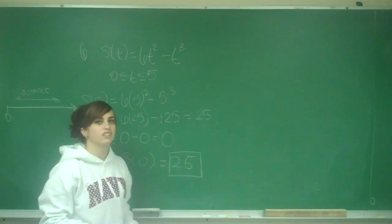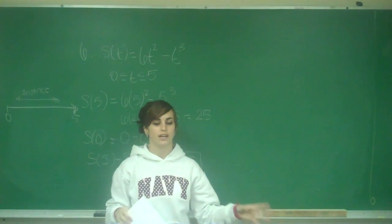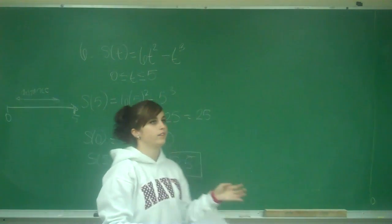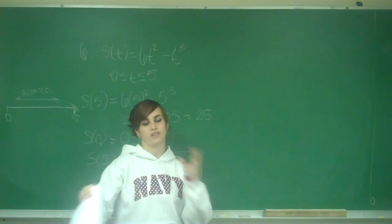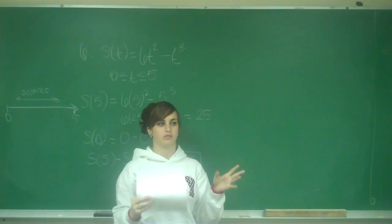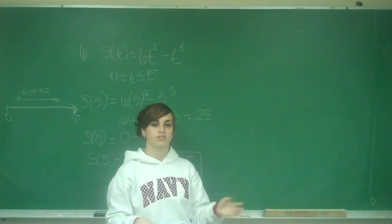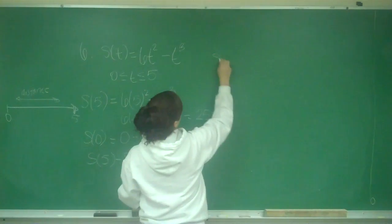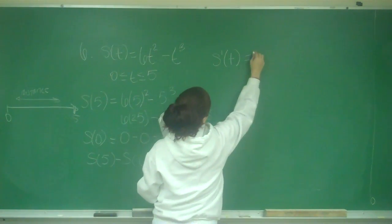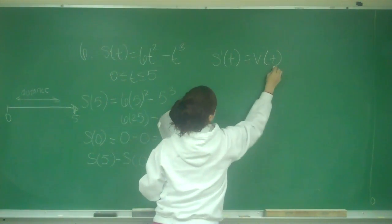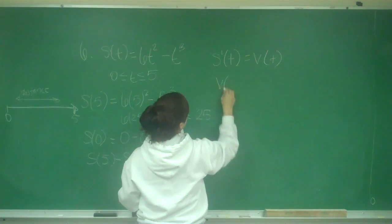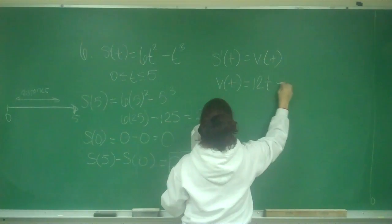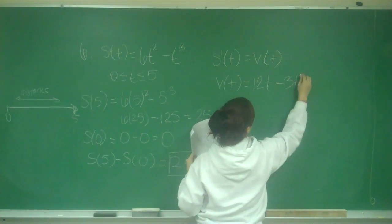So the total distance is a little different. We also need to know when it's traveling in the positive and in the negative direction. So in order to do that, I need to find velocity, because velocity is when it's moving, position is when it's still. So velocity is the derivative of the position function. So I have S prime of t equals V of t. So V of t is going to be 12t minus 3t squared.